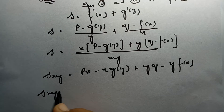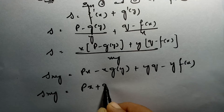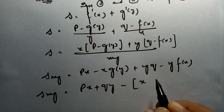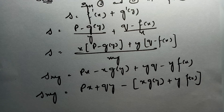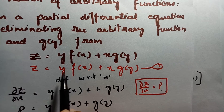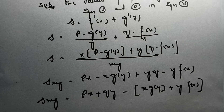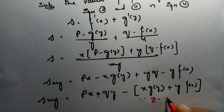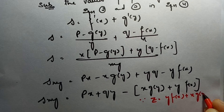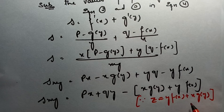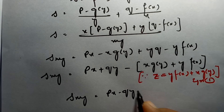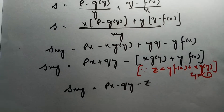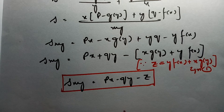So sxy = px + qy − (x·g(y) + y·f(x)). From the original equation, x·g(y) + y·f(x) = z. Since from equation 1, z = y·f(x) + x·g(y), after substituting, the final answer is sxy = px + qy − z. There are no arbitrary functions here, so we have successfully eliminated f(x) and g(y). This is the final answer.